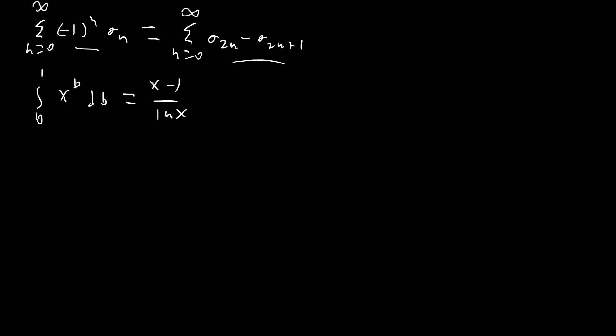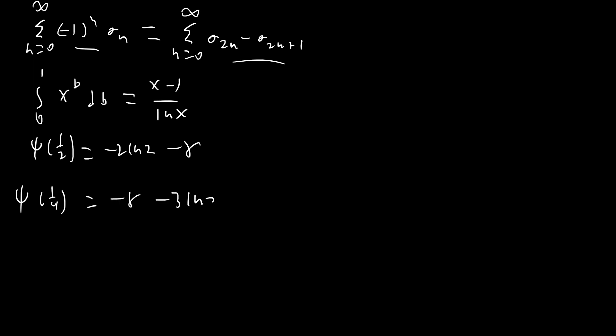Finally, the only other thing we're going to need are some specific values of the digamma function. I'm not going to prove them right here, but I have a video showing how to calculate values of the digamma function. We're going to be using that digamma of 1/2 equals negative 2 ln 2 minus gamma, and digamma of 1/4 equals minus gamma minus 3 ln 2 minus pi over 2. So let's go ahead and jump right into the integration.